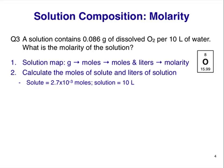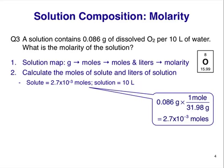Did you remember how to convert 0.086 grams of O2 into moles of O2? If you didn't, here's how to do it. To convert grams into moles, we need a conversion factor that involves grams and moles — this is called the molar mass, and for elements it comes directly from the periodic table. In this case, the molar mass is used upside down to allow units to cancel. 1 mole of O2 is equivalent to 31.98 grams of O2, and the answer comes out to be 2.7 × 10⁻³ moles of O2.